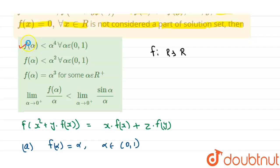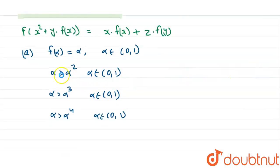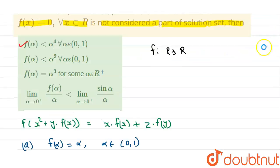We will check option B. Option B states that f(α) < α² for α ∈ (0, 1). We have already established that α > α² for α ∈ (0, 1), meaning f(α) = α is greater than α², not less. So option B is also wrong.